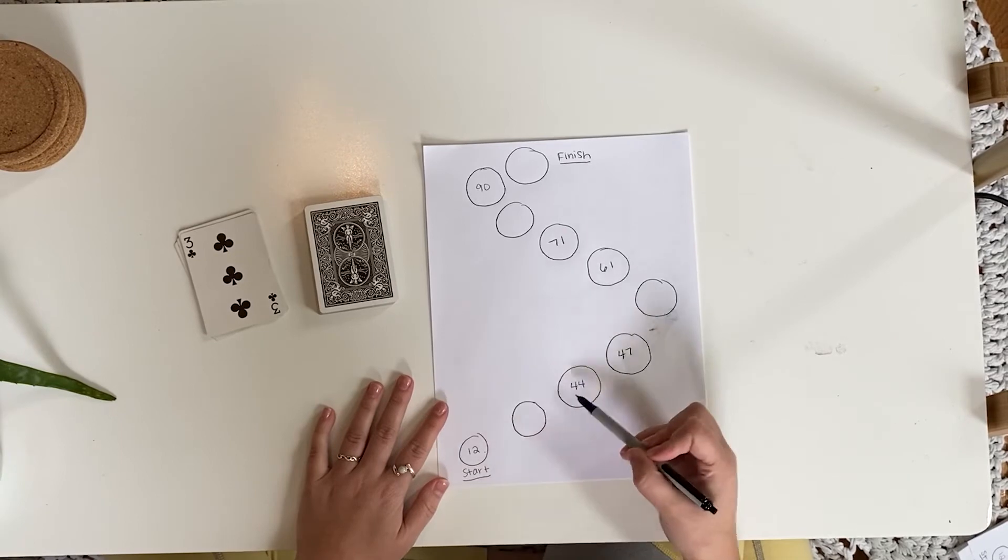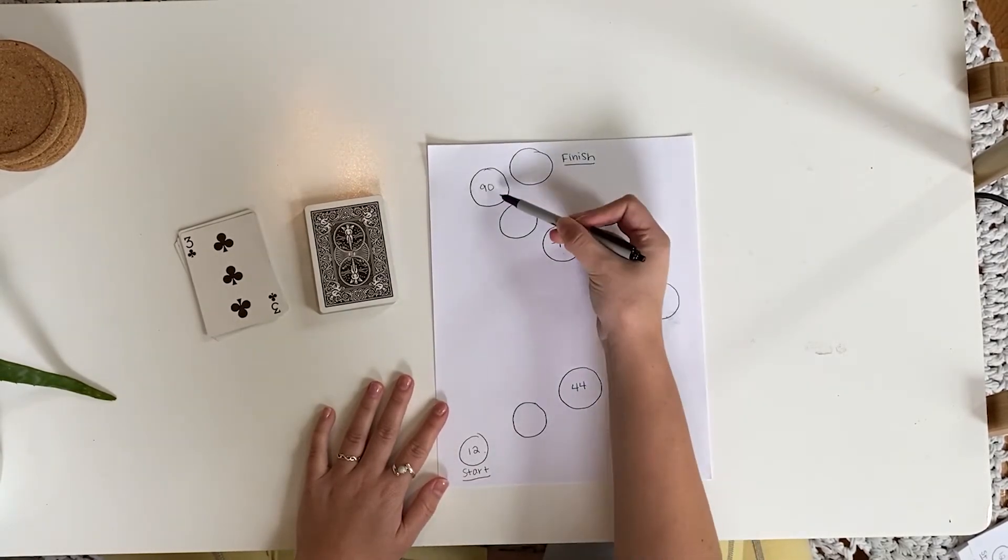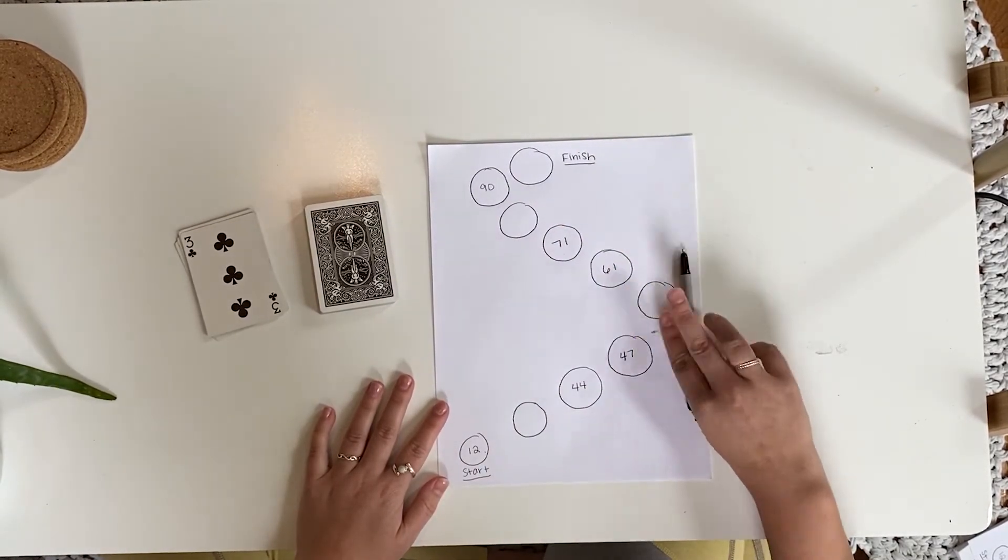You can only fill in the number on your path if it keeps the path in order from smallest to largest. If there is no place, you skip your turn.